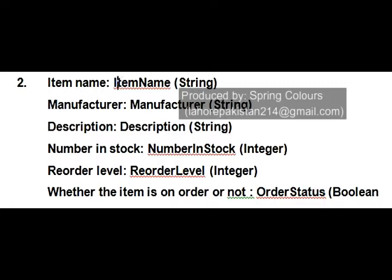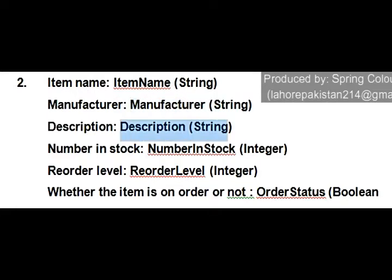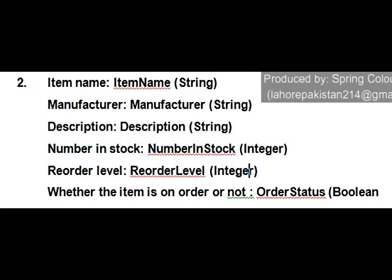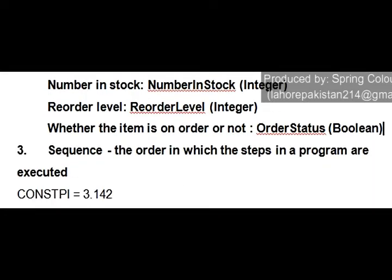Coming to data types: ItemName should be string, Manufacturer should be string, and Description should be string. NumberInStock should be integer because you are counting the number of items. OrderLevel should also be integer. Whether the item should be ordered or not should be boolean data type, because boolean only comprises two values — yes or no.